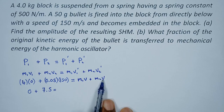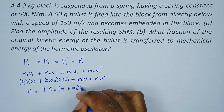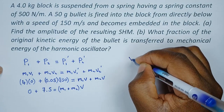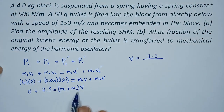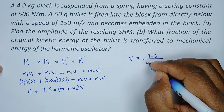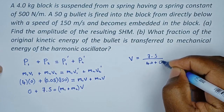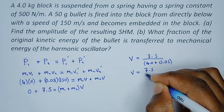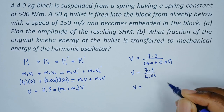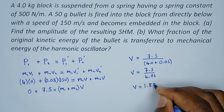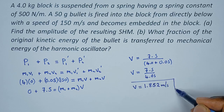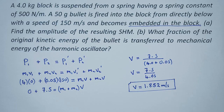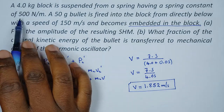We factor out velocity, giving us (m1 + m2) with a common velocity v. To calculate this velocity: v = 7.5 divided by the sum of their masses. The sum of their masses is 4.0 plus 0.05, so v = 7.5 / 4.05, which gives us a final velocity of 1.852 meters per second. This is the velocity of both objects after the bullet has been embedded in the block. Now we use this to calculate the amplitude with spring constant 500.